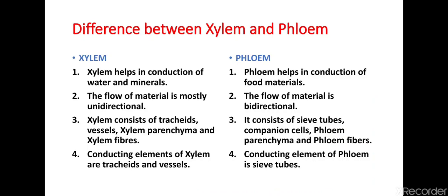You should also know the differences between xylem and phloem. Xylem helps in the conduction of water and minerals, whereas phloem helps in the conduction of food material. Second, in xylem the flow of material is mostly unidirectional — it moves only in one direction from roots to different parts of the body. But in phloem the flow of material is bidirectional — up to down or down to up. Third, xylem consists of tracheids, vessels, xylem parenchyma, and xylem fibers, whereas phloem consists of sieve tubes, companion cells, phloem parenchyma, and phloem fibers.